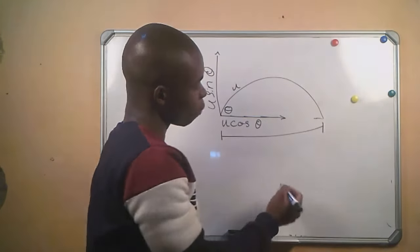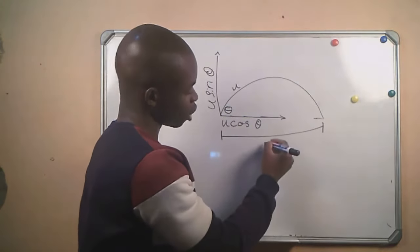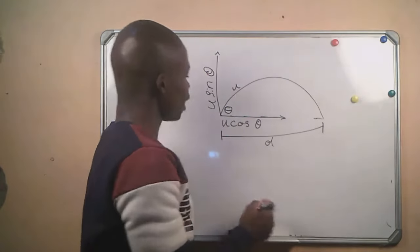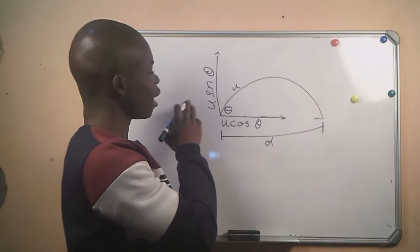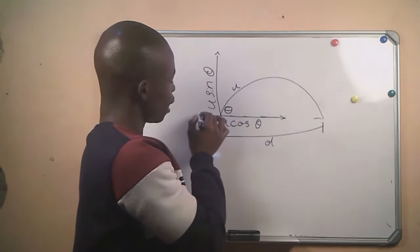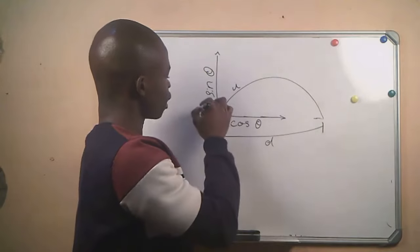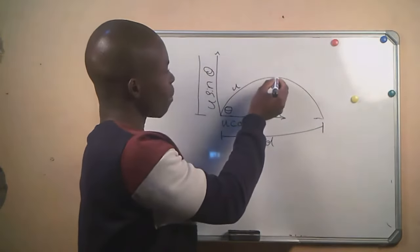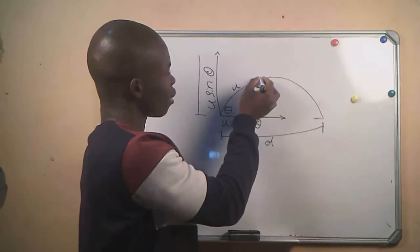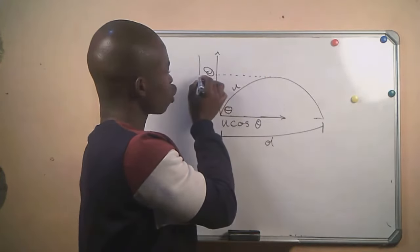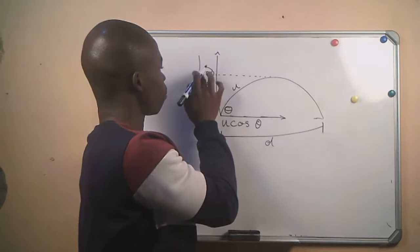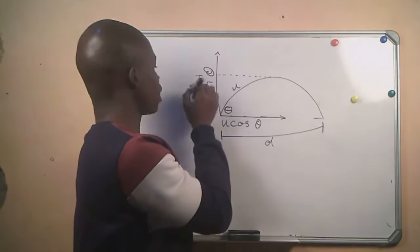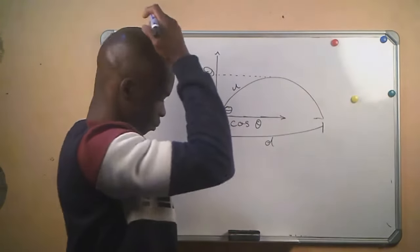The vertical component is responsible for the maximum height reached by the object, which is h.